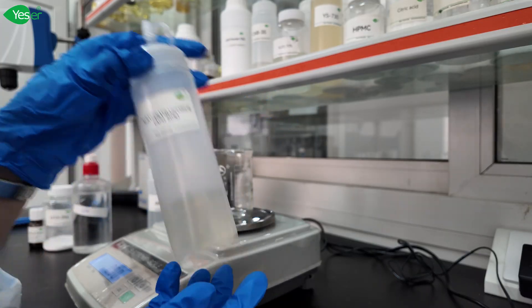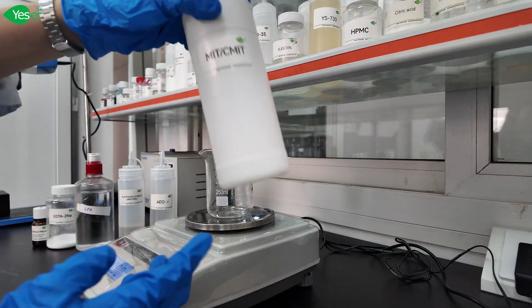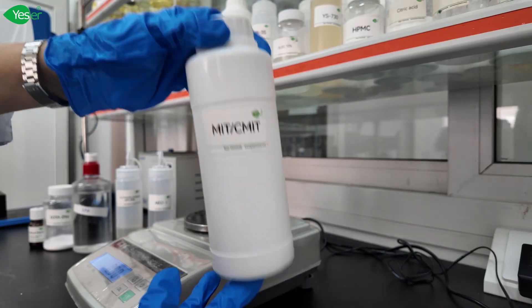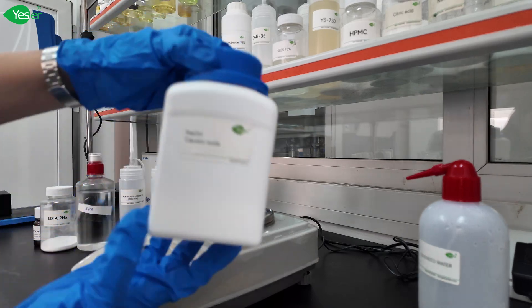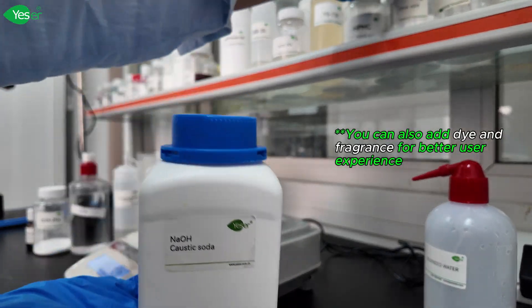Next is our preservative MIT CM8 and for our pH adjusters we have sodium hydroxide and citric acid and lastly our deionized water. So that is all the ingredients that we need for our glass cleaner.